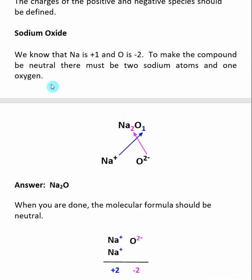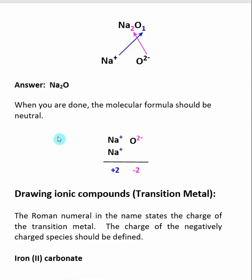The charge on one element becomes the subscript on the other element, and this almost always leads to the correct answer. So our answer for sodium oxide is Na2O. In the last step, we check that the charges cancel. Inside Na2O, I have two sodiums, each with a +1 charge, giving a total of +2. I have one oxygen with a -2 charge. The positive and negative charges equal each other, so I know I have the right answer.